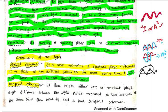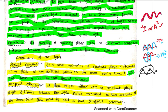Temporal coherence means that if there exists either zero or constant phase difference between two light fields measured at two instances at the same point, then the wave is said to have temporal coherence. Either zero phase difference or constant phase difference must be maintained at two instances for temporal coherence.